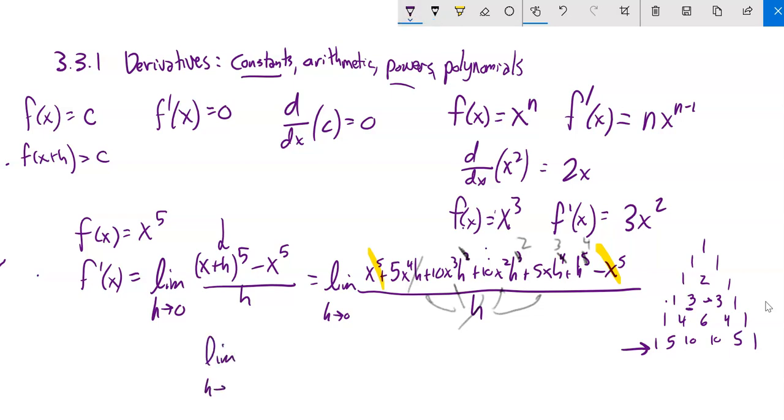So what I have is the limit as h goes to 0 of this 5x to the 4th. That doesn't have any h in it. But notice every other term will have an h in it. 10x cubed h plus 10x squared h squared, etc.